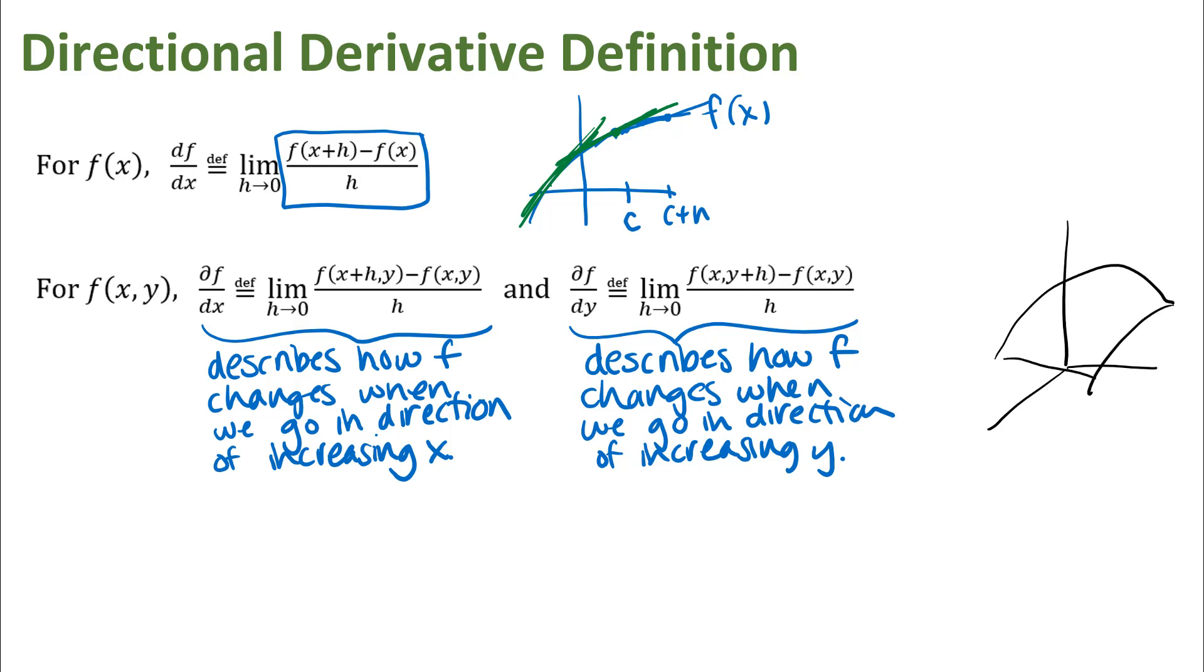When we're thinking about these partial derivatives at a point, we've got some point x, y, and then we've got a point on the surface that corresponds to what that x, y point is, the f of x, y. And when we look at the partial derivative with respect to x, we're holding y constant and letting x change.